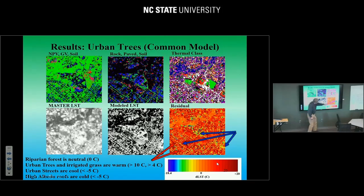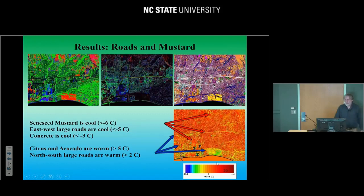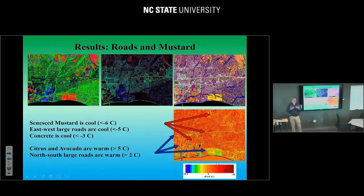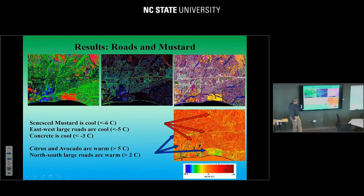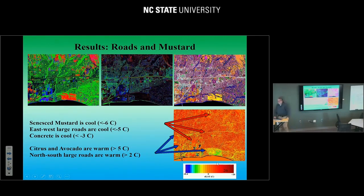A couple things stand out: riparian forests come out as pretty much neutral — they were driving the model. Urban trees and irrigated grasses are warm — about up to 10 degrees Celsius warmer than riparian areas. Urban streets were all cool — about 5 degrees Celsius cooler than expected because they're being shadowed. High albedo roofs were also cold. So for example, the Mission Santa Barbara shows up with their red tile roofs as cold temperature anomalies. Looking at senesced mustard, dead black mustard is not only spectrally distinct from dead grass, it's also thermally distinct — a lot colder — likely due to the vertical structure of the little dead stalks. East-west roads turned out to be cold in this model, while north-south roads were warm — road orientation matters because east-west roads have trees shadowing them, while north-south roads point right into the sun with no tree cover.